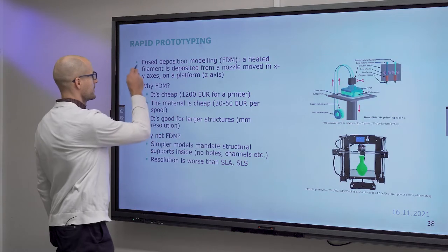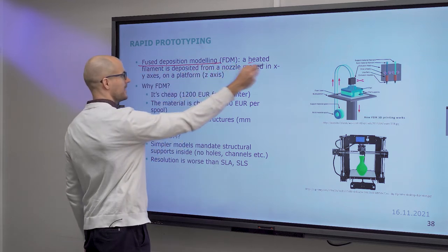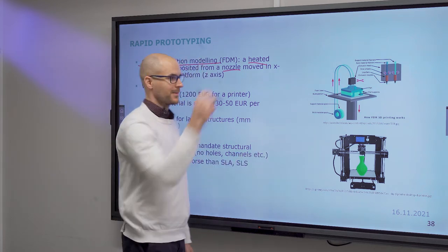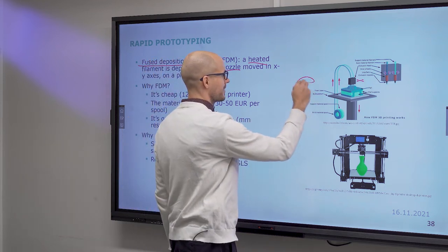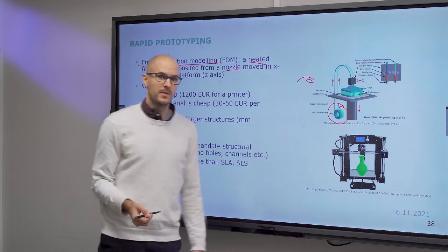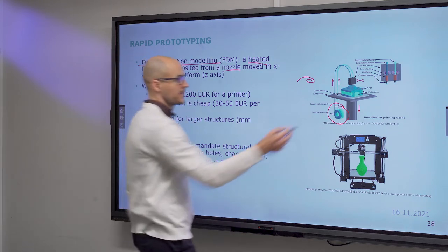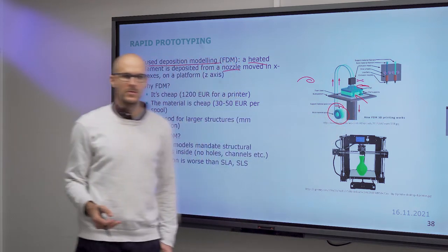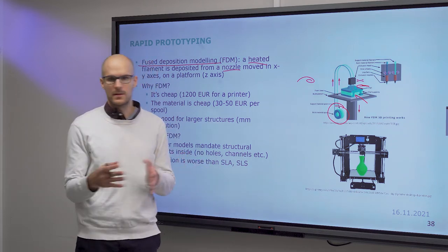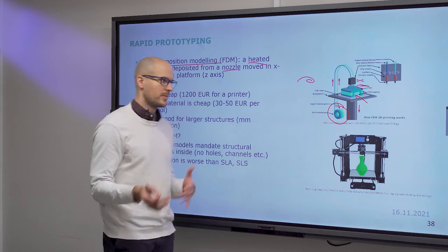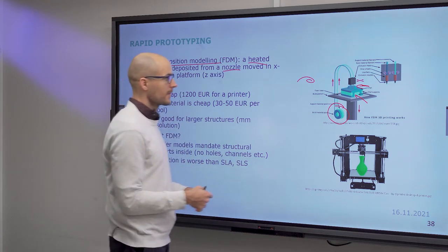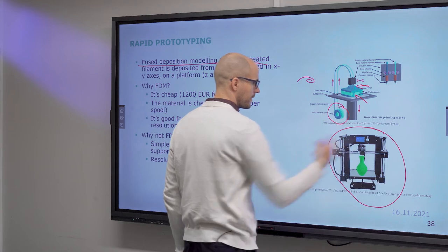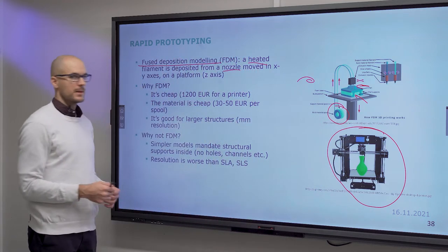With fused deposition modeling, the filament is heated, pushed through a nozzle, and moved in three axes. Wherever you want to print your voxel is where the head moves, and it's printed line by line, layer by layer. You can also use more than just one material. One very common way to do it is to print support structures from a water-soluble material and print the part itself from a non-water-soluble material. But for this you need two printer heads. These printers are cheap.